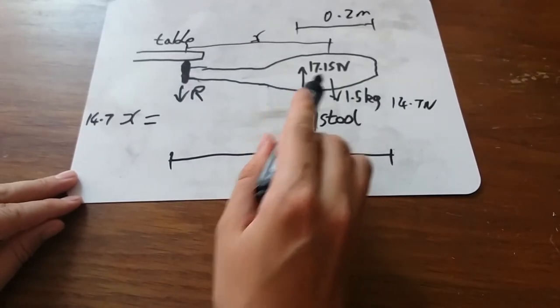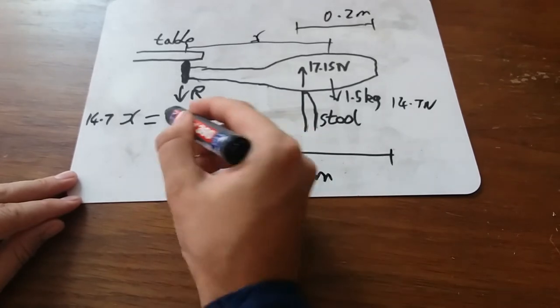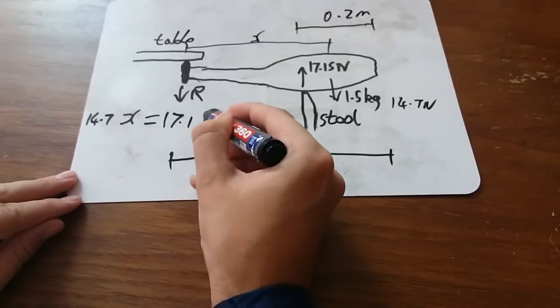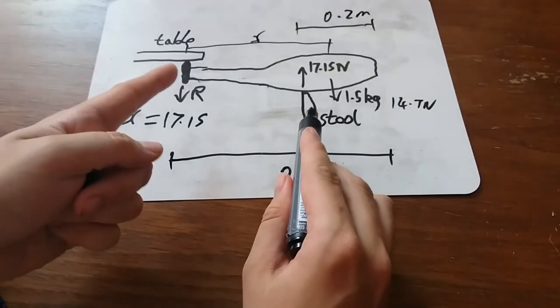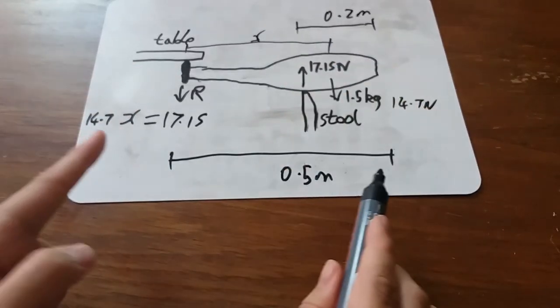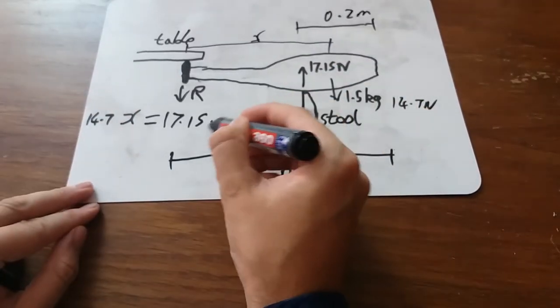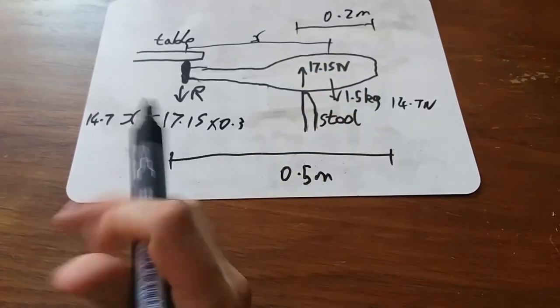which would be 17.15 times by whatever the distance from the pivot to the stool is. Or if we know that 0.2 and the whole thing is 0.5, then 0.3 is what's left.